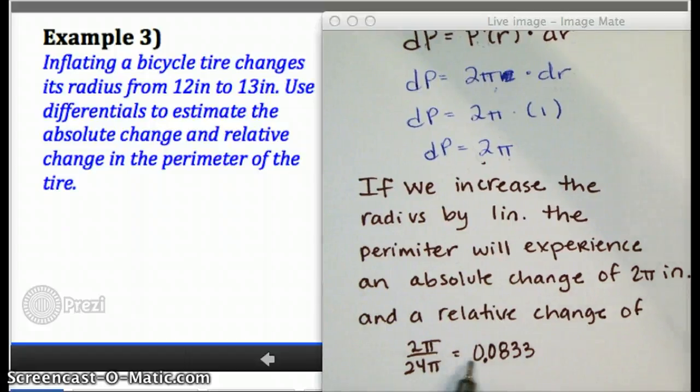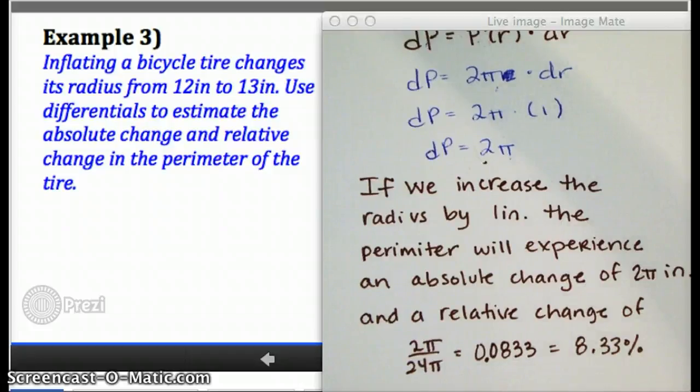which is 0.0833, in other words, 8.33%. We could say if I change the radius by 1 inch, the perimeter will increase by 8%.